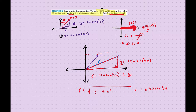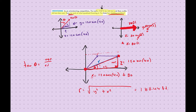So Tia is 188.44 feet from her starting position. Now the second part: we need the quadrant bearing, meaning we need to find this angle. We know two sides — the opposite side is y and the adjacent side is x. The trig function relating opposite and adjacent is tangent, so we use tan inverse of y over x. Plugging in the components and taking the tan inverse gives us 24 degrees.